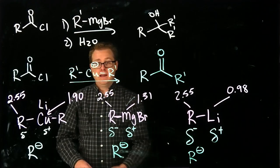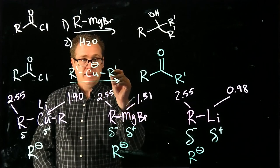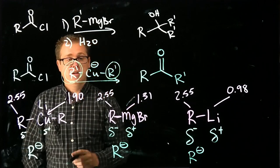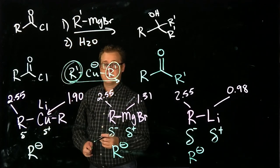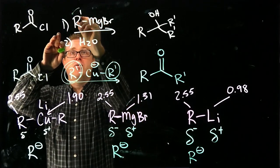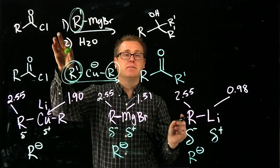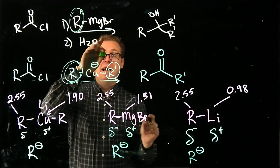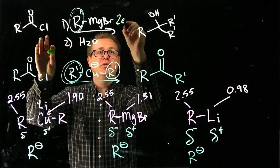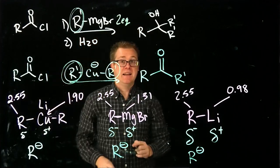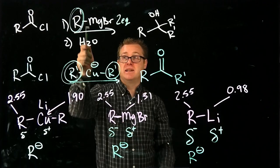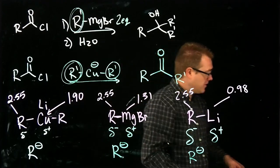Be careful: the Gilman has two alkyl groups, but only one of them adds. In the Grignard, there is only one alkyl group but it adds twice. So when you do the Grignard reaction, you need at a minimum two equivalents — typically in excess — because it adds twice.